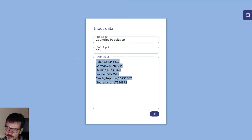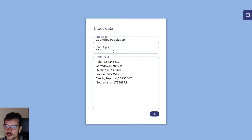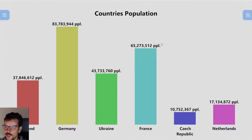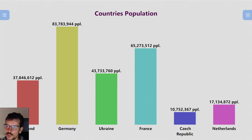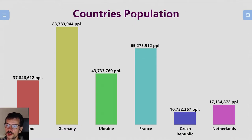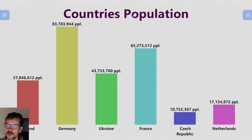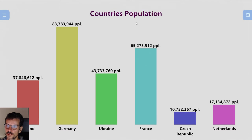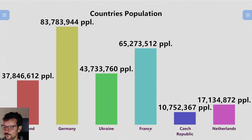So you can paste your data here and your title here. The new thing is suffix — if you put it here and press OK, you will see the label right here. Another thing is if you hover over these labels, you can use scroll to make them bigger or smaller.